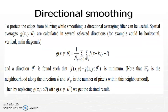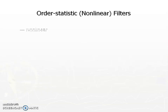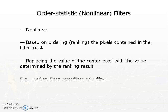Directional smoothing: instead of taking all pixels in the neighborhood, we take only pixels in the desired directions and perform filtering. The filter is (1/Nθ) times the sum over Nθ total pixels in the desired neighborhood direction.